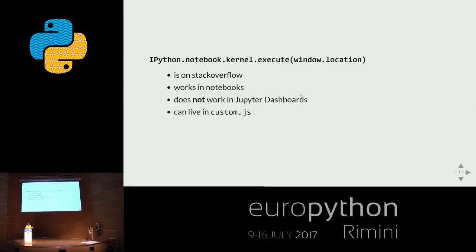If you Google 'how to run Jupyter notebooks with arguments', this kind of JavaScript snippet comes up on StackOverflow. It works in notebooks, but it does not work if you want to create a nice-looking Jupyter dashboard, because the kernel is not accessible through JavaScript. On the other hand, this snippet can live in custom JS if you want to use it.